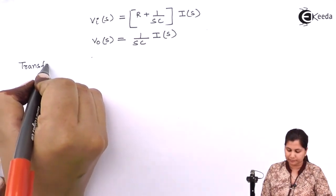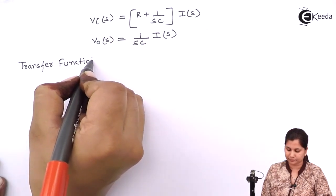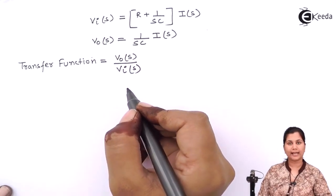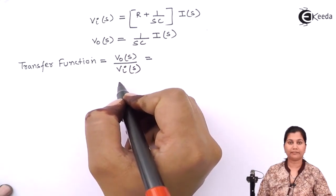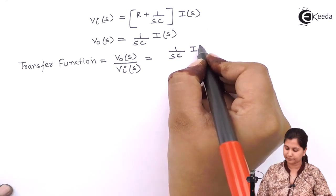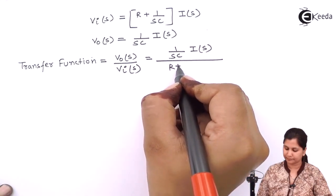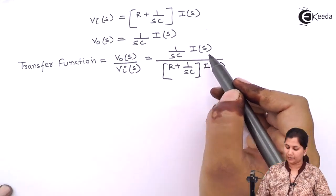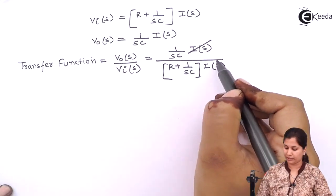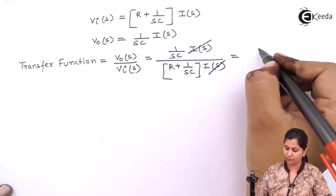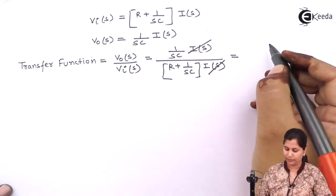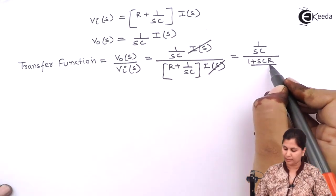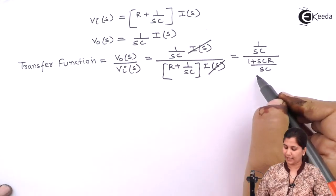Transfer function will be ratio of V0S and VIS. Putting the values of V0S and VIS, in the numerator and the denominator, we have both IS, so they will be cancelled out. The value of V0 by VIS will be 1 upon SC. Here we have 1 plus SCR by SC. This SC and SC will be cancelled out.